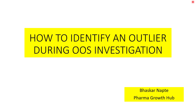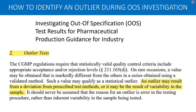Hello and welcome. In today's video we will talk about how to identify an outlier during an out-of-specification investigation. This is one of the challenges I often see people face while investigating an OOS. If you look at the US FDA guideline on the investigation of out-of-specification, or even the guidelines given by the EMA, you will find that both of them mention the outlier test.